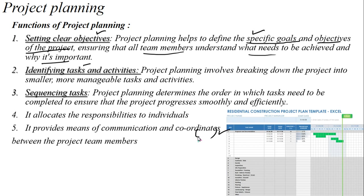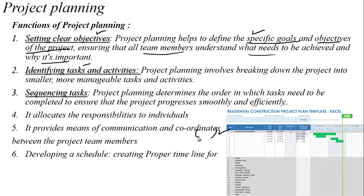So that we will work cleanly. It provides means of communication and coordinates between project team members — communication problems will be resolved and communication will be very smooth. And finally, in planning, the event schedule will have a proper timeline added to each task — the time, end date, and the duration of the task is complete. These are the six functions of project planning.